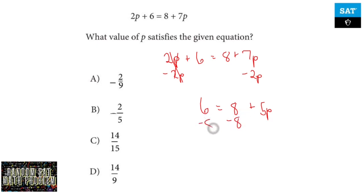Subtract 8 because now it's a two-step. So I've got negative 2 equals 5p.